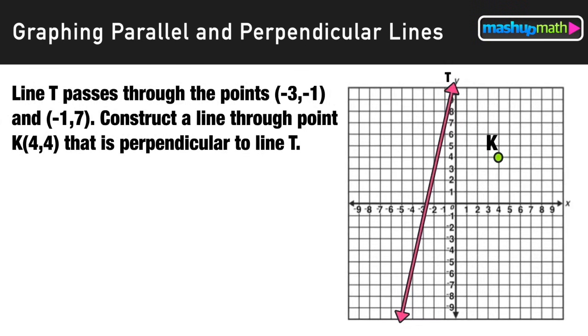Okay, let's look at a different example now. Here we have a line t passing through two points negative three negative one and negative one positive seven. We have a point k that is not on the line and we want to construct a line that is perpendicular to line t that passes through that point k.